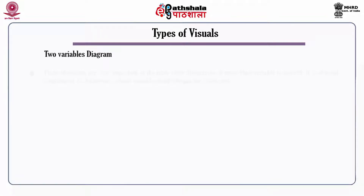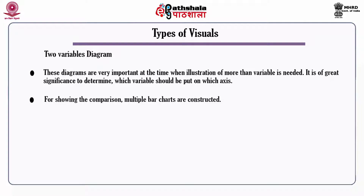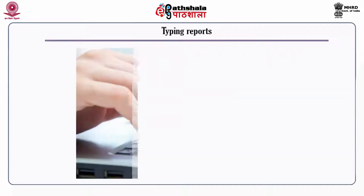The pie graph can be made more attractive by adding patterns, colors and depth. Two-variables diagram: these diagrams are important when illustration of more than one variable is needed. It is of great significance to determine which variable should be placed on which axis. For showing comparisons, multiple bar charts are constructed; always provide a gap between the bars for clarity. Area charts illustrate stacked data like a stacked bar chart and indicate total record data.